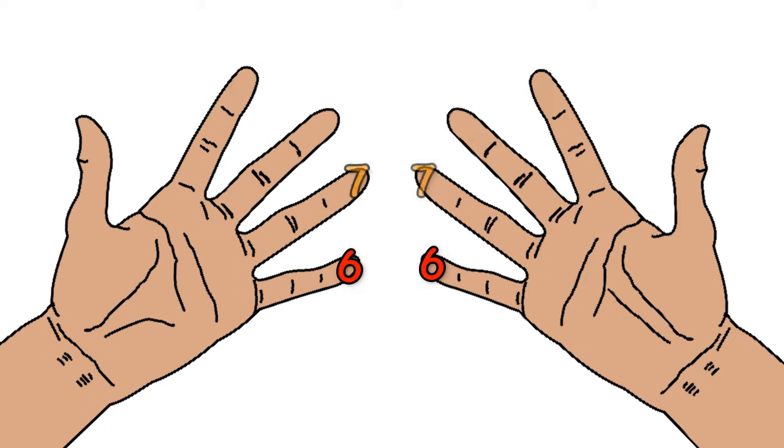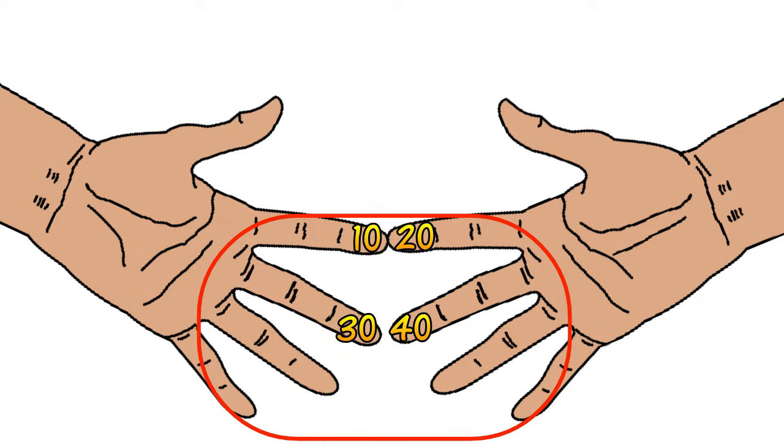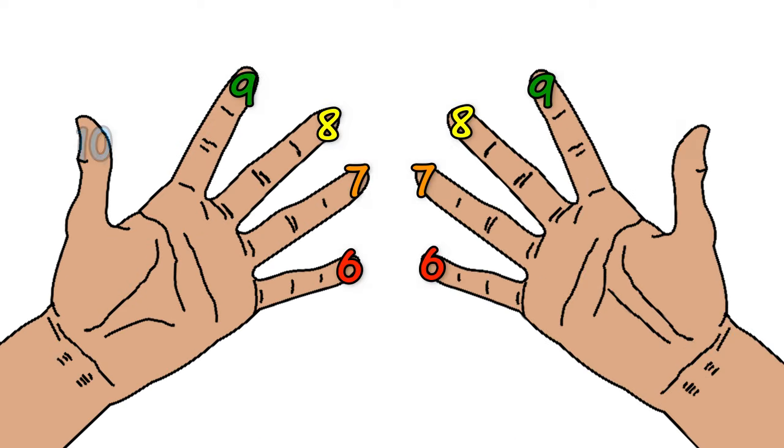Let's say we wanted to do 9 times 9. So we get the 9th finger on each hand. We join and we count in tens from the join including the fingers below. So we have 10, 20, 30, 40, 50, 60, 70, 80. And then we multiply the single units above the join. So we have 1 on the left times 1 on the right. 1 times 1 is 1. So 80 plus 1 equals 81.